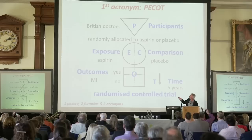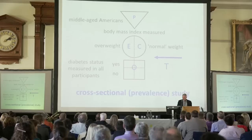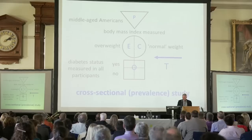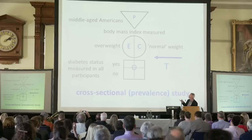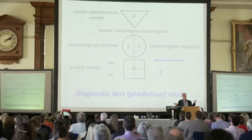This is just a randomised trial — it looks the same as the other picture, except in this case you allocate people randomly, in this case to aspirin or placebo, rather than by measurement. Here's a cross-sectional study — the arrow goes sideways. If you measure something at one point in time, you've got a prevalence measure. American women, in this case, with body mass index measured: some are overweight, some are normal weight, some have diabetes and some don't. Cross-sectional study.